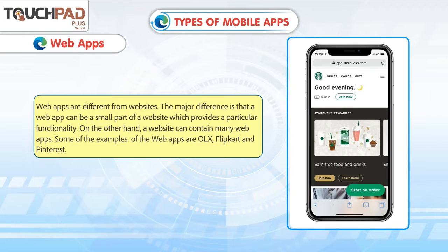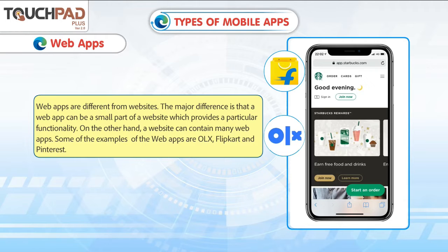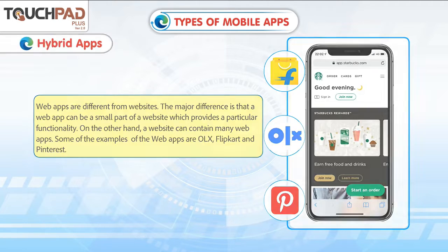On the other hand, a website can contain many web apps. Some of the examples of web apps are OLX, Flipkart and Pinterest.